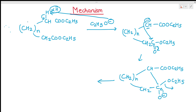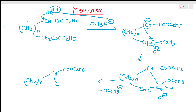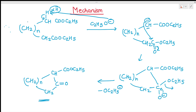After removal of OC₂H₅⁻, we obtain (CH₂)ₙ-CH-COOC₂H₅ with a C=O in the ring — a cyclic ketone derivative. This compound can then undergo hydrolysis and decarboxylation to give a cyclic ketone.